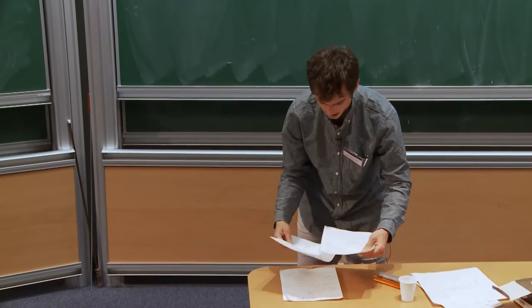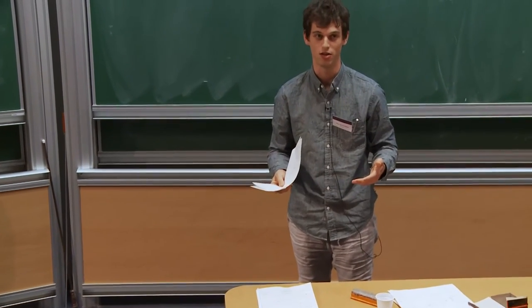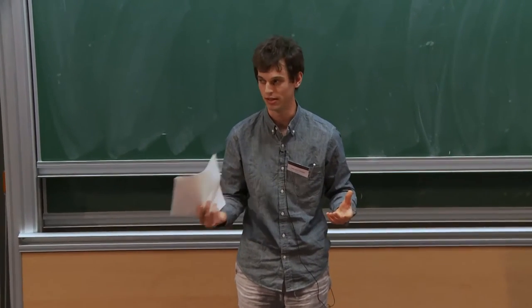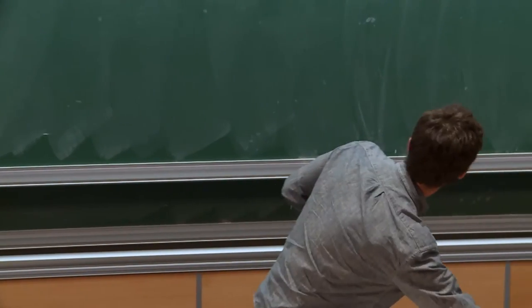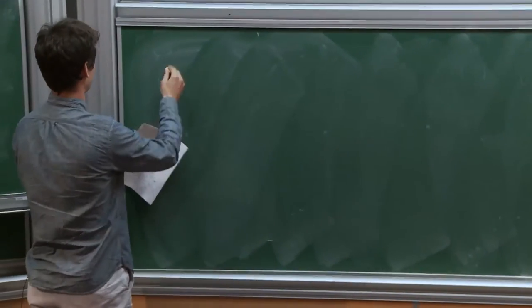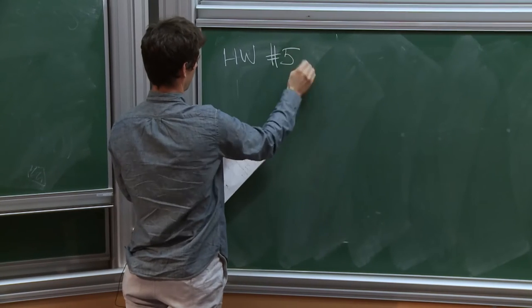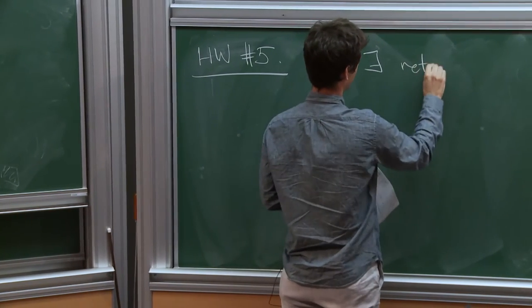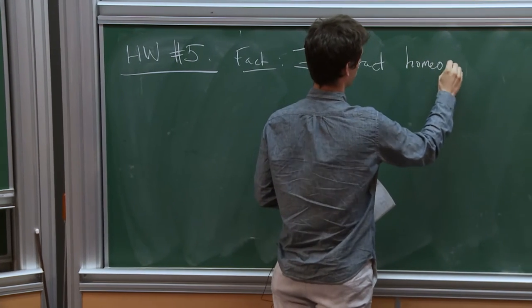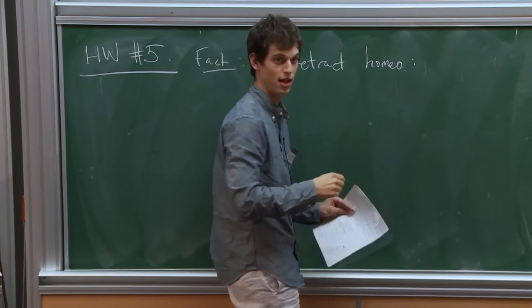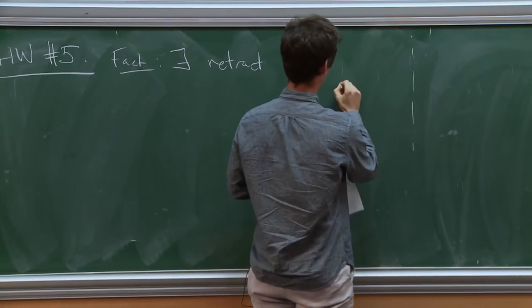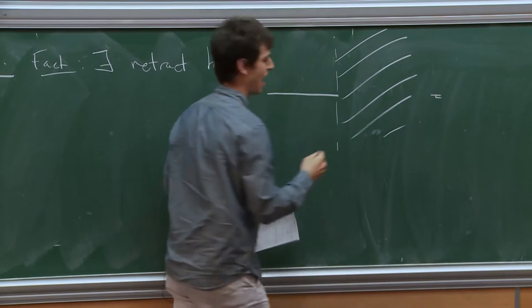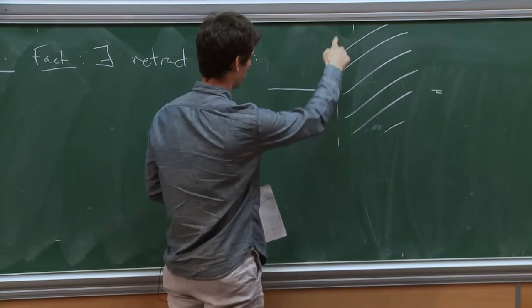So this is a retract which is locally finite dimensional, but where the dimension varies within connected components. This is something that Joel alluded to earlier today. And this is also homework question number five. So the fact is that there exists a retract which is homeomorphic to the following subset of R2.